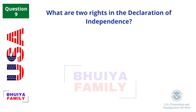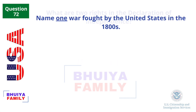What are two rights in the Declaration of Independence? Life. Liberty. Name one war fought by the United States in the 1800s. The Civil War.